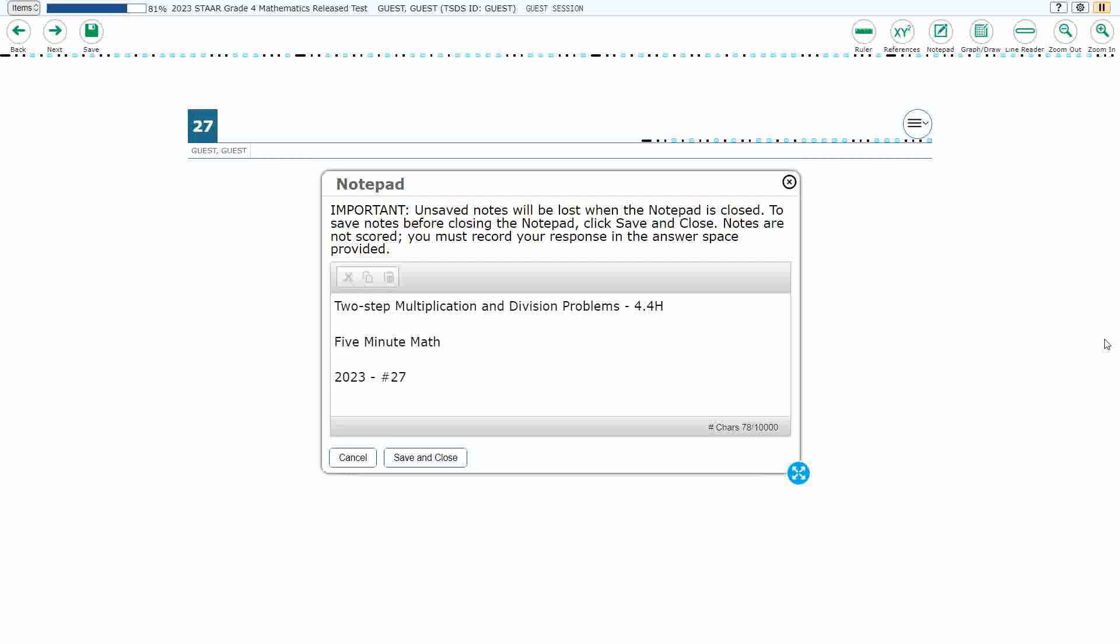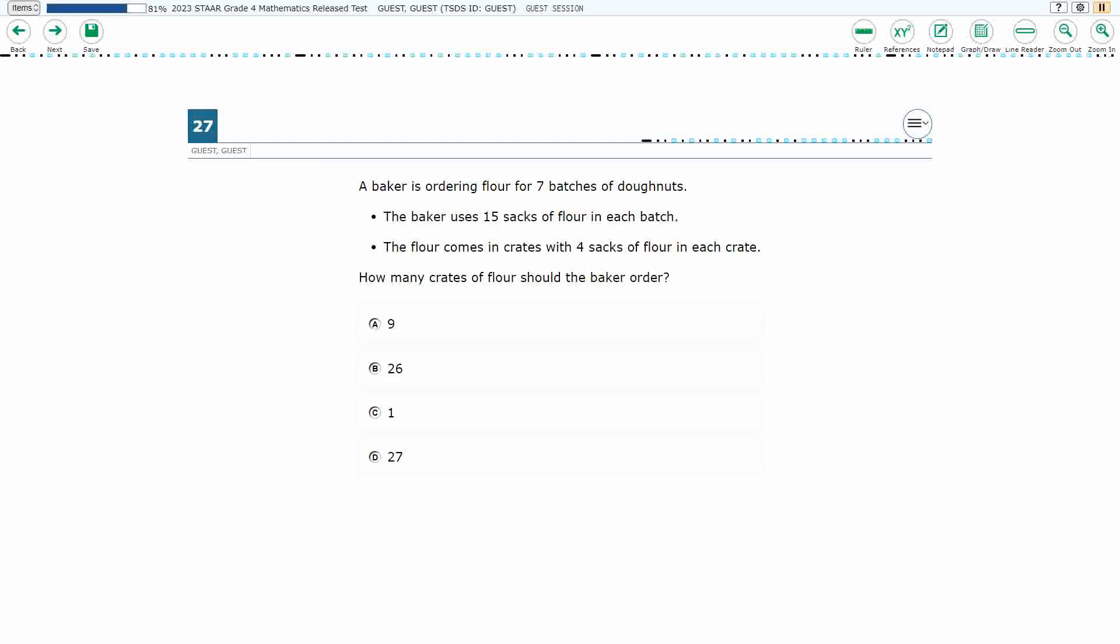Today we are looking at the fourth grade concept of two-step multiplication and division problems. This is standard 4.4H in the great state of Texas, and we are using item number 27 of the 2023 released STAAR test. If you haven't done so already, please take a moment to pause the video, work this problem out on your own, unpause it and we will look at our answers together.